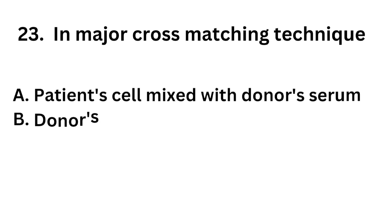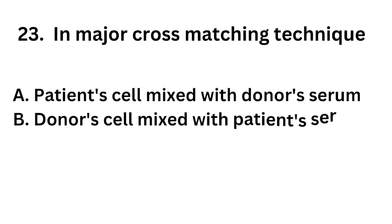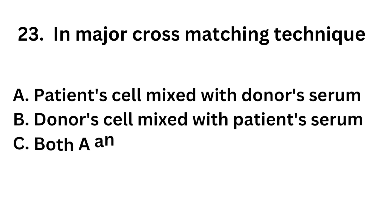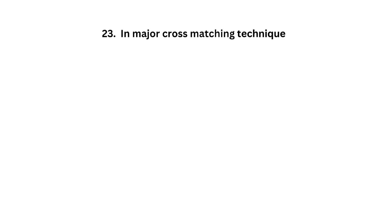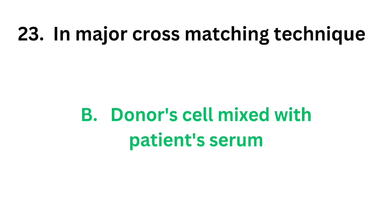Question number 23. In major cross-matching technique: Option A: Patient cell mixed with donor serum. Option B: Donor cell mixed with patient serum. Option C: Both A and B. Option D: None of the above. The correct answer is Option B, donor cell mixed with patient serum.